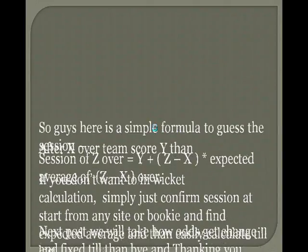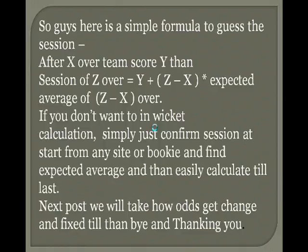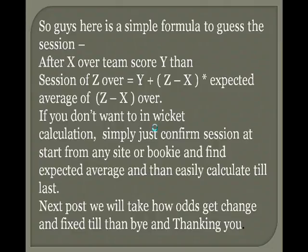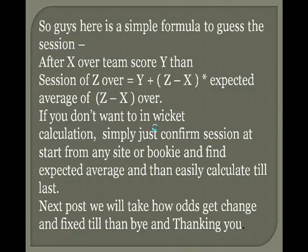Here is a simple general formula to guess the session at any time: after X overs, team score Y — then session of Z overs equals Y plus (Z minus X) multiplied by expected average of (Z minus X) overs. If you don't want to go into wicket calculations, simply confirm the session at the start from any booking site, find the expected average, and then easily calculate till the last over.